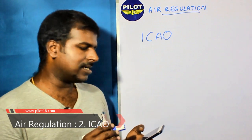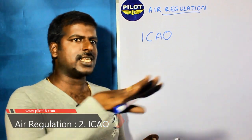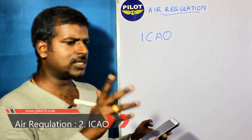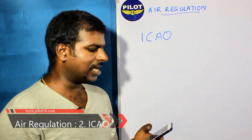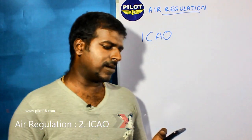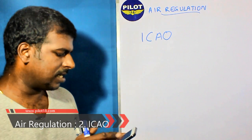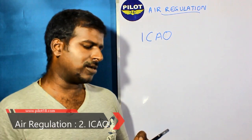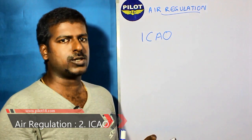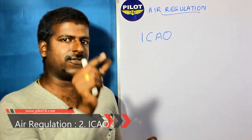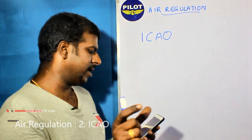Annex eight is about airworthiness of an aircraft. Annex nine covers facilitation — the facilities and rules regarding the facilitation of services. Annex ten covers aeronautical telecommunication, with sub-sections on radio navigation aids, communication procedures, communication systems, surveillance, and aeronautical radio frequency spectrum utilization across VHF, UHF, and HF bands.